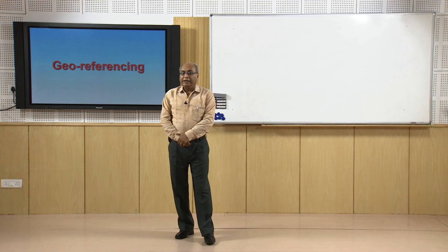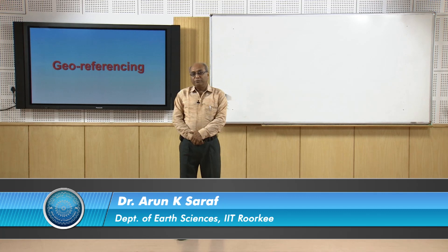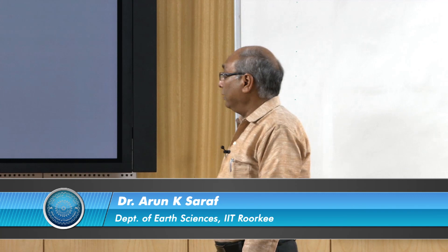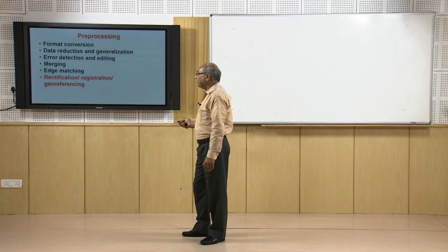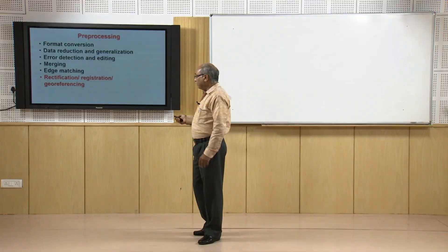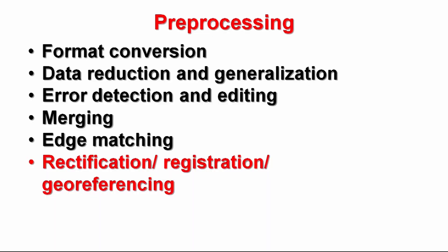Hello everyone. Earlier we discussed the preprocessing operations performed in GIS, and among those we have seen that georeferencing is one of the very important ones. In this lecture we will go through details about what georeferencing is — sometimes called rectification, and in some literature also called image registration. We will see why it is required, how it can be done, and what different techniques are available along with their comparisons.